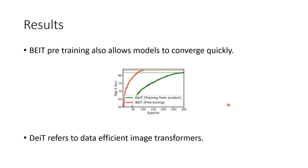BEIT pre-training also allows models to converge more quickly. An important aspect to note is that the number of epochs shown is for BEIT after fine-tuning, whereas for DEIT it's training from scratch. DEIT refers to Data-Efficient Image Transformer, which is just another form of transformer.